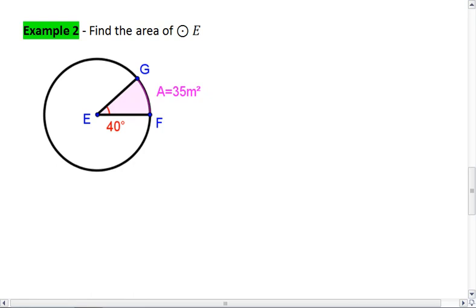In example 2, I want you to find the area of circle E. Here you're given the radius is 40 degrees, or not the radius, the angle here is 40 degrees, and this sector area is 35 meters squared.